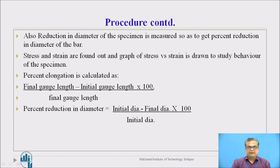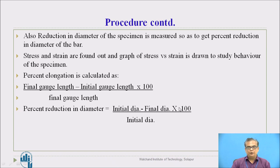Reduction in diameter of the specimen is measured. Percent elongation is calculated as: (final gauge length minus initial gauge length) divided by the initial gauge length, multiplied by 100. Percentage reduction in diameter is calculated as: (initial diameter minus final diameter) divided by initial diameter, multiplied by 100. Apart from these two calculations, stresses are also measured — ultimate stress, yield stress, etc. — from the loads obtained in the test.